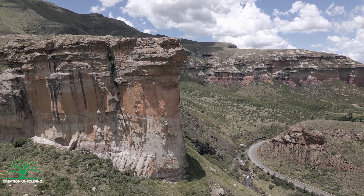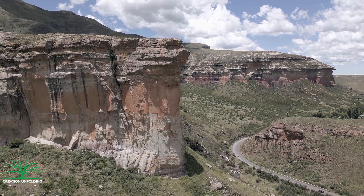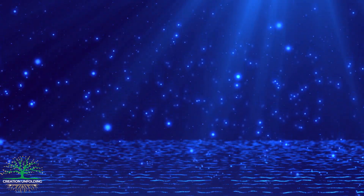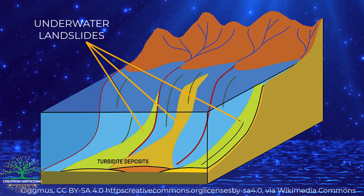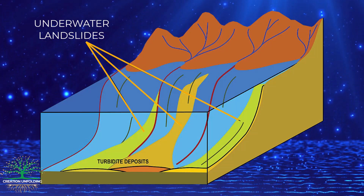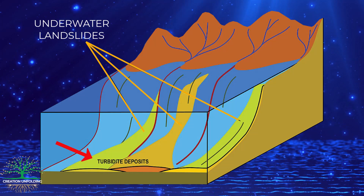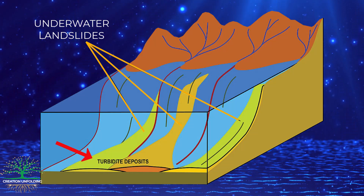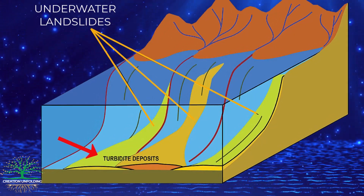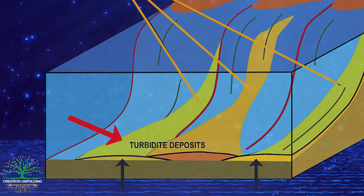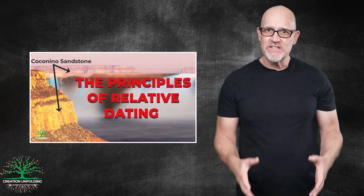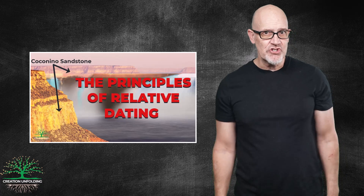Each bed represents an event that took place over perhaps hundreds of years — as when mud settles out of the water column — or almost instantly, as when underwater landslides produce turbidity currents, which in turn form another kind of sedimentary structure called turbidites. It's up to the geologist to figure out how much time was involved. In accordance with the principle of superposition, the beds on the bottom were almost certainly deposited first. For more information on relative dating principles, links to two relevant videos are in the description.